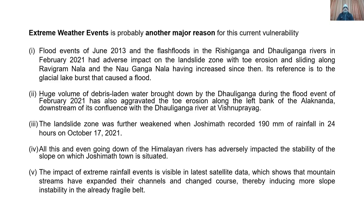Extreme weather events are another major reason for Joshimat's current vulnerability. The flood events of June 2013 and the flash floods in the Rishiganga and Dhauliganga rivers in February 2021 had an adverse impact on the landslide zone, with toe erosion and sliding along Ravigram Nala and Nau Ganga Nala. The February 2021 event, attributed to a glacial lake burst, brought a huge volume of debris-laden water down the Dhauliganga river. Additionally, Joshimat recorded 190 mm of rainfall in 24 hours on October 17, 2021, further impacting slope stability.